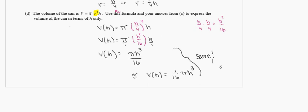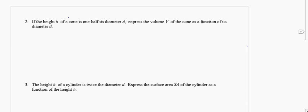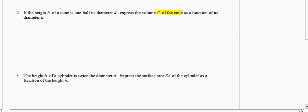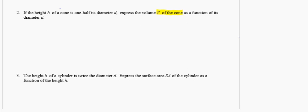Moving to the top of the next page, now we're focusing on the whole problem at once. Number two says the height of a cone is one-half of its diameter, and we need to express its volume in terms of diameter. The formula for the volume of a cone is one-third times π times r squared times h — it's on your formula sheet. We want only the letter d on the right side, so we can't leave r or h in the formula.